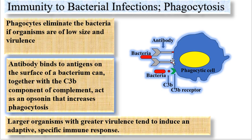These are known as Fc gamma R1 receptors specific for IgG1, and Fc gamma R3 receptors specific for IgG3. When the bacteria are captured by the antibody, these antibodies will bind to their specific receptors on the surface of the phagocytic cell, and this is followed by phagocytosis of the bacteria — it is antibody-mediated phagocytosis.